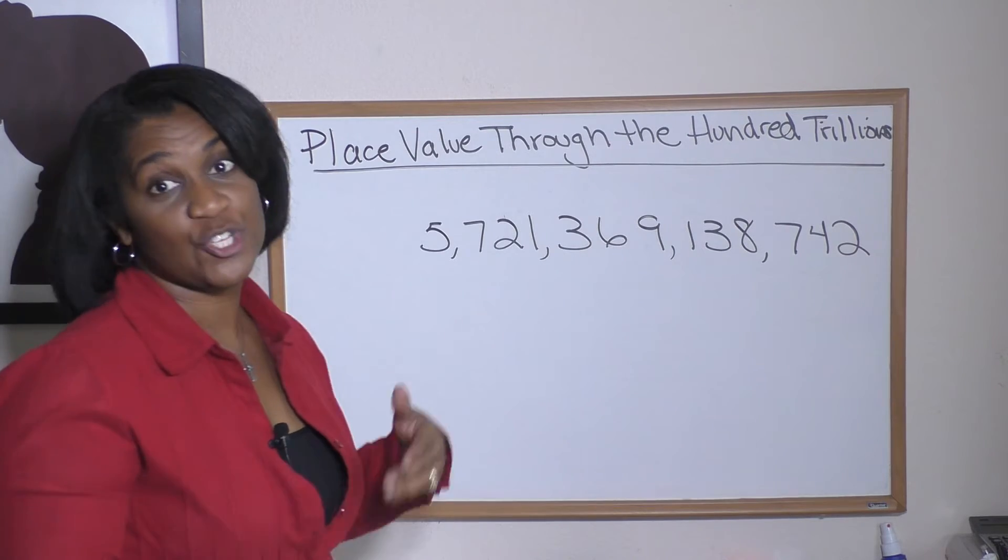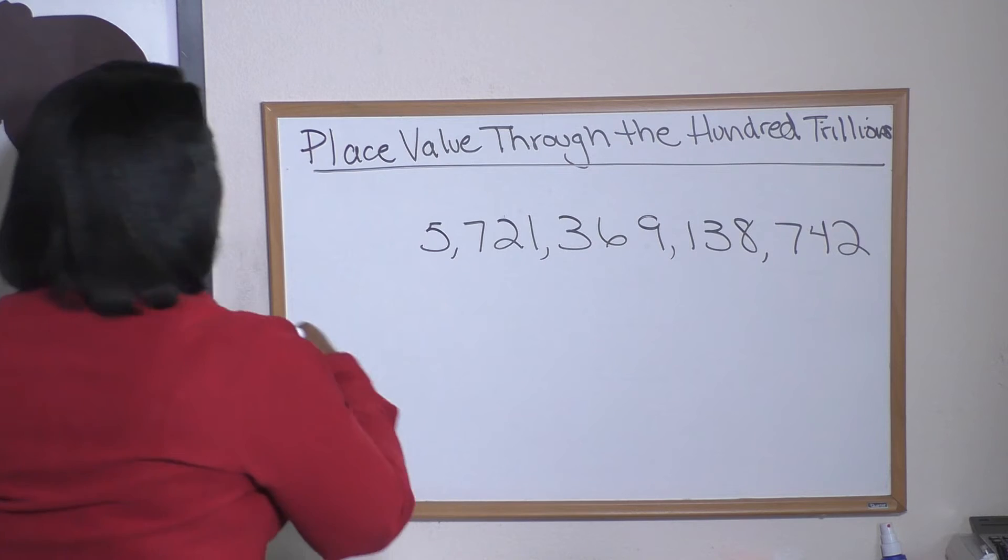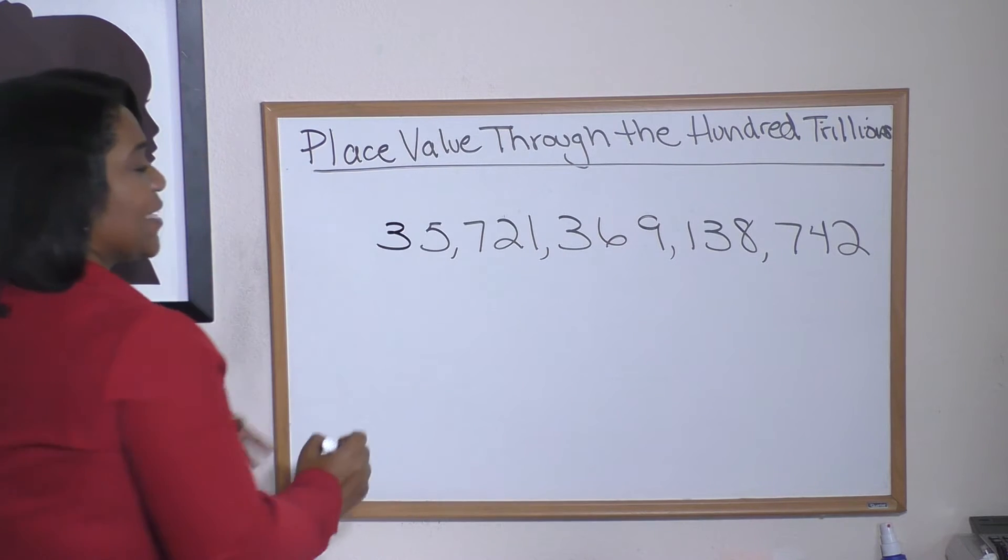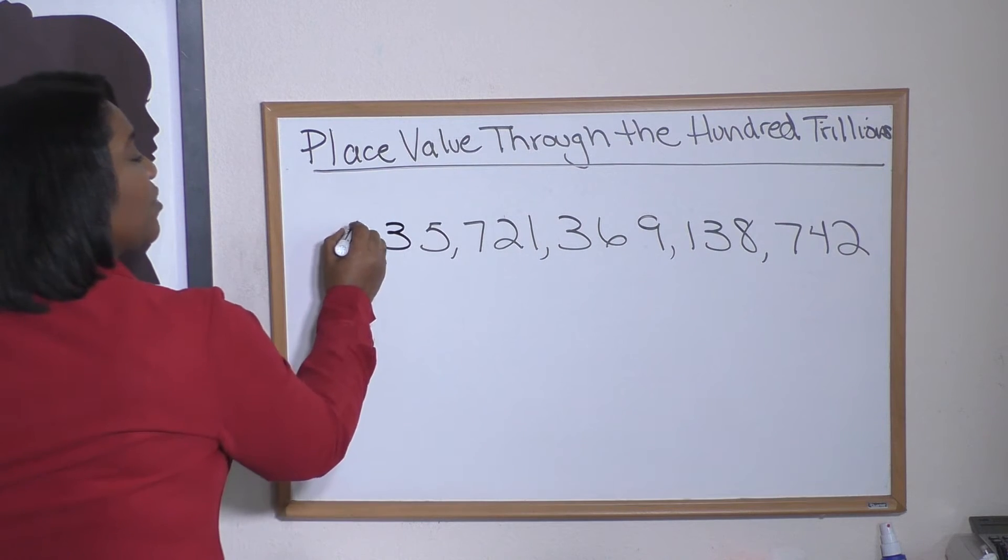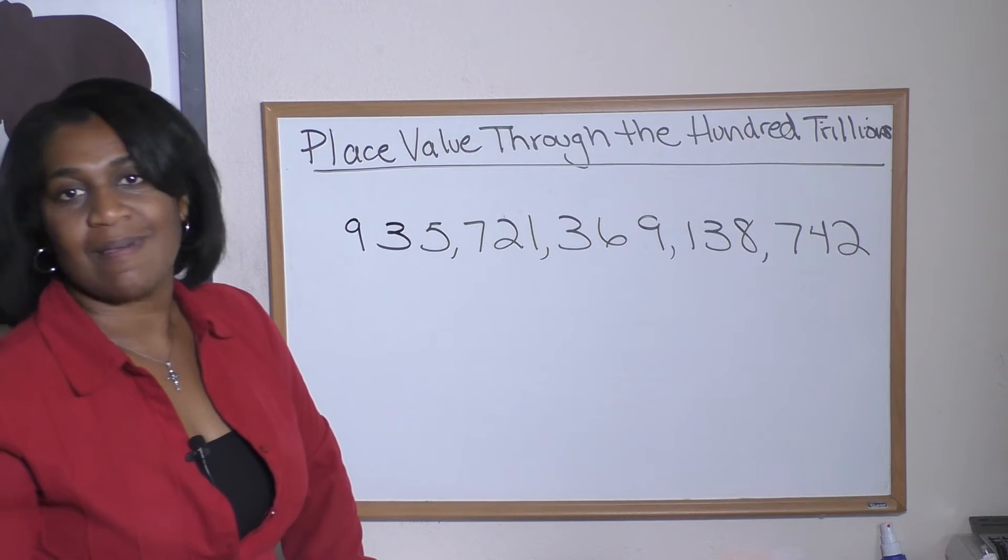Wait, we hit a comma. After billions goes trillions. So I stopped at the five there, five trillion. But the truth is, they said hundred trillion, so let me add a couple numbers. Three is in the ten trillions, and I'm going with nine for the hundred trillions.